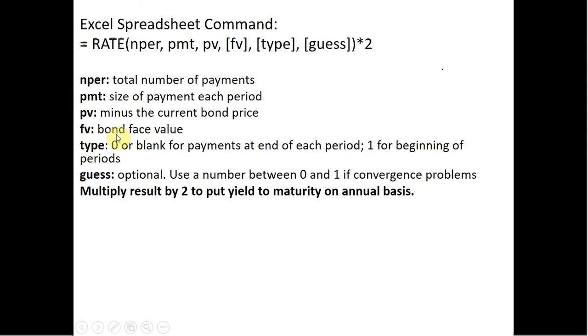fv will be the face value of the bond. type, we can put in zero or leave blank for payments at the end of each period, and that's usually the assumption we make in these problems. If you wanted to have the payments start at the beginning of each period, you would just put in one for type.